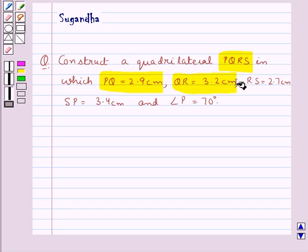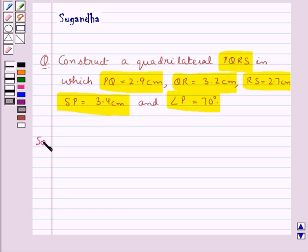QR is equal to 3.2 cm, RS is equal to 2.7 cm, SP is equal to 3.4 cm and angle P is equal to 70 degrees. Now let's move on to the solution.